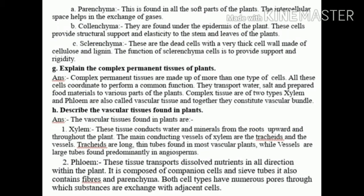Number 8g: Explain the complex permanent tissues of plants. Answer: Complex permanent tissues are made up of more than one type of cells. All the cells coordinate to perform a common function. They transport water, salts, and prepared food materials to various parts of the plants. Complex tissues are of two types — xylem and phloem — also called the vascular tissues. Together they constitute the vascular bundle.